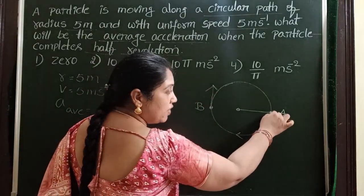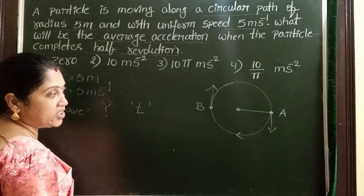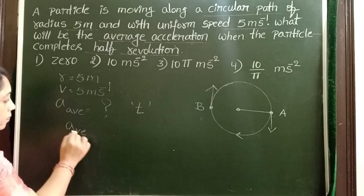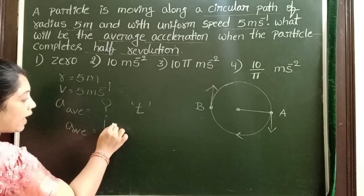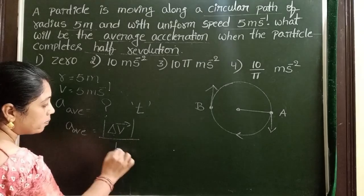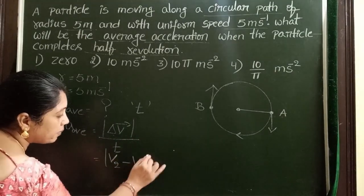Here magnitude of the velocity is constant, but the direction of the velocity continuously changes. Average acceleration is equal to magnitude of the change in velocity by time: final velocity minus initial velocity by time.